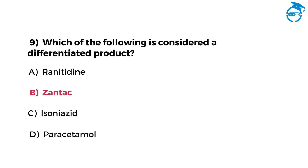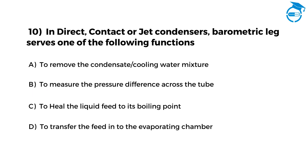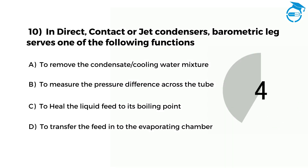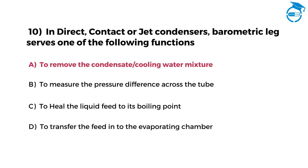Here is the last one. Give it a try. In indirect contact or jet condensers, the barometric leg serves one of the following functions. Option A: to remove the condensate or cooling water mixture. Option B: to measure the pressure difference across the tube. Option C: to heat the liquid feed to its boiling point. Option D: to transfer the film to the evaporating chamber. Post your answer in comments. The right option is A, that is to remove the condensate or cooling water mixture.